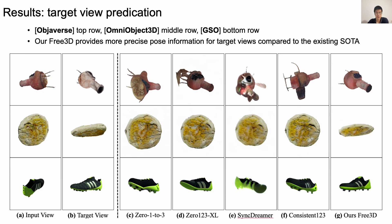Here are examples on different datasets. Free3D achieves better results even under challenging viewpoints with different categories. Interestingly, existing methods cannot deal with unconventional objects such as the pie in the first row, while our Free3D is still robust for such challenging scenarios. More results are provided in our paper and supplemental materials.